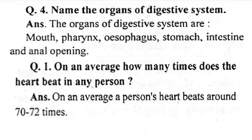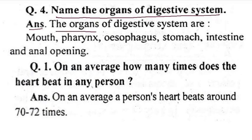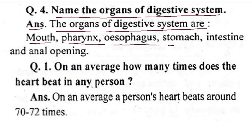Name the organs of the digestive system. Answer: the organs of the digestive system are the mouth, pharynx, esophagus, stomach, intestine, and the anal opening.